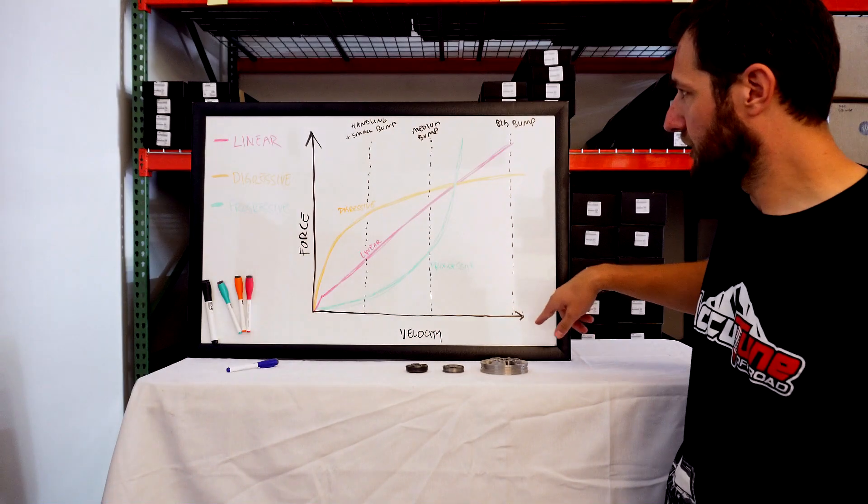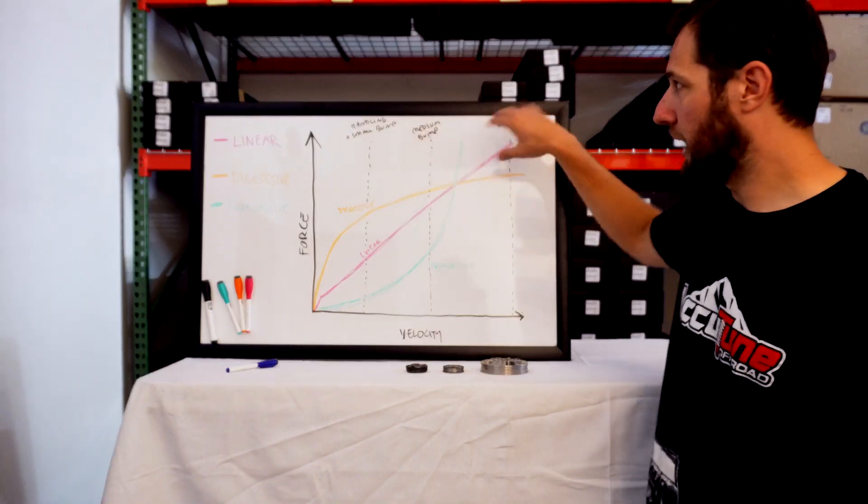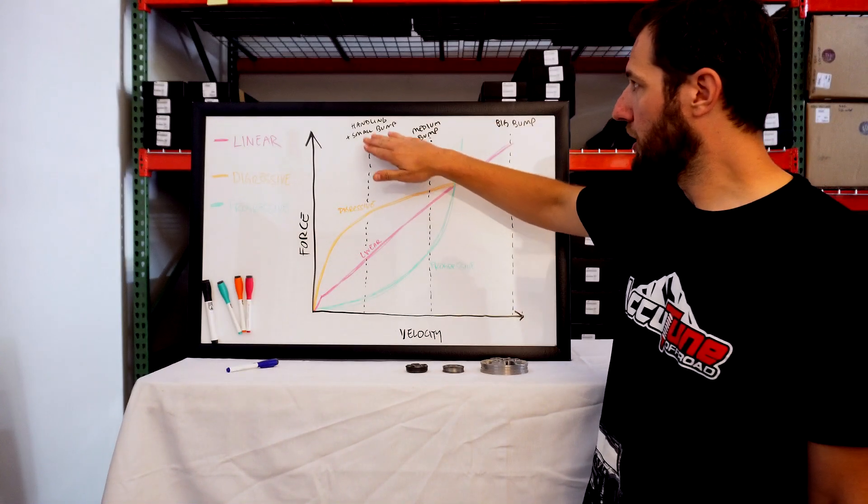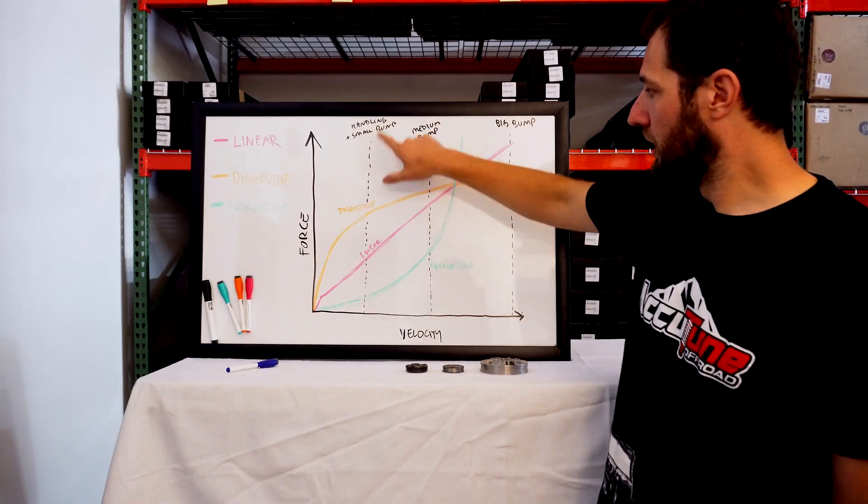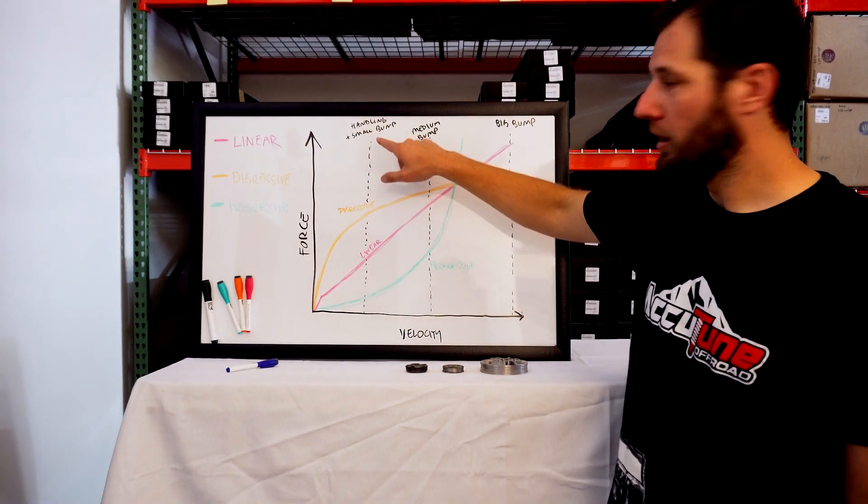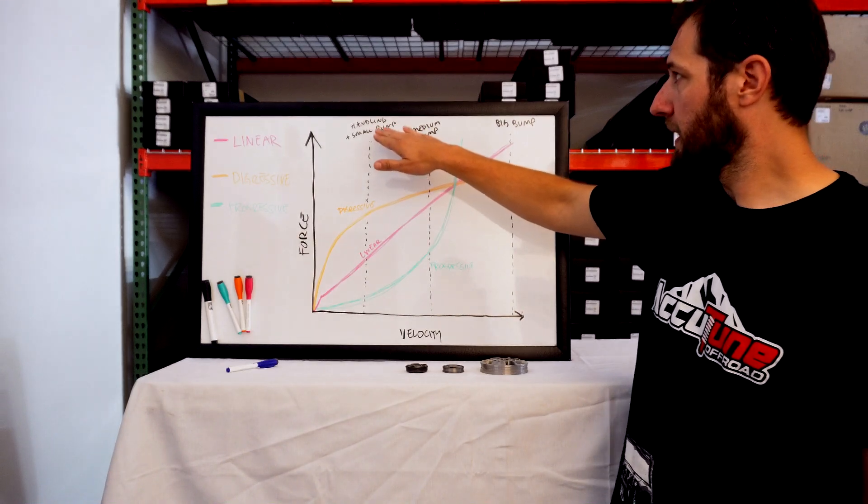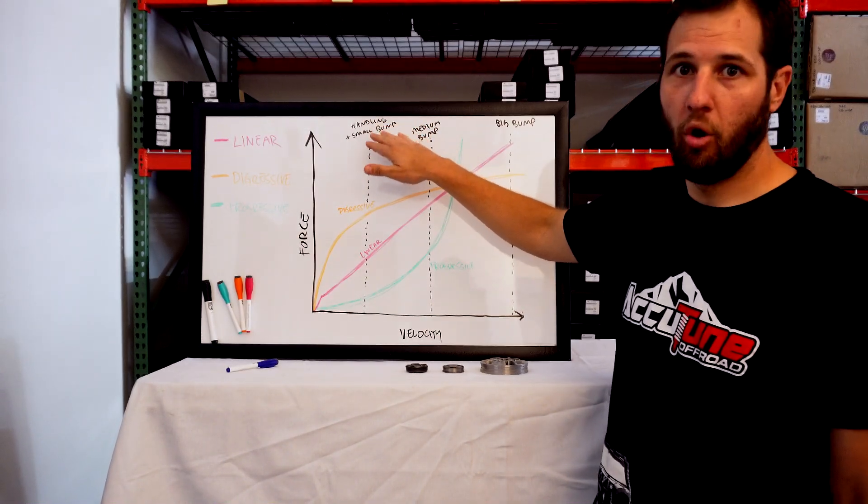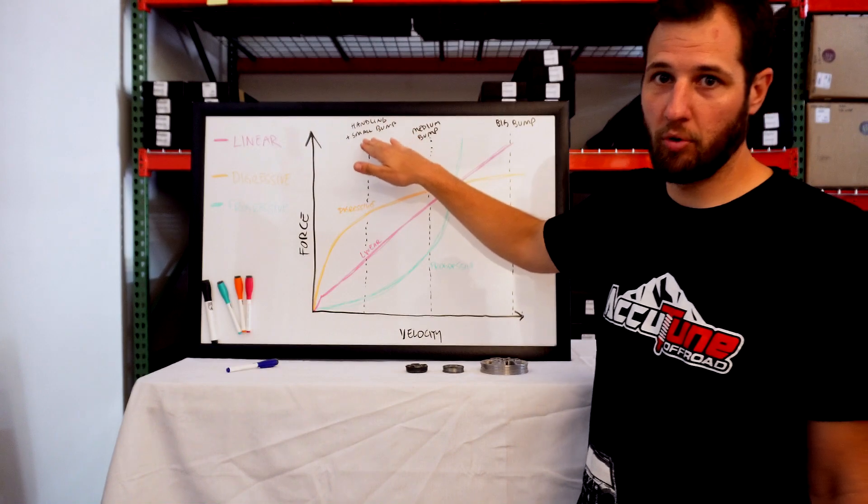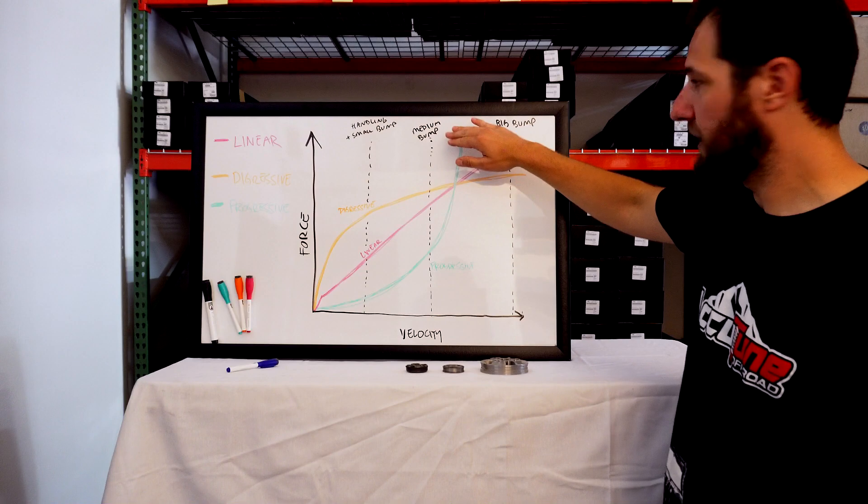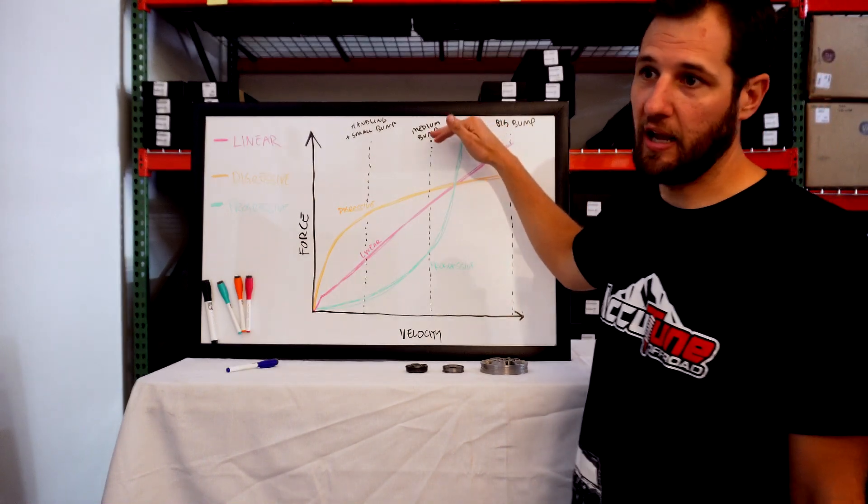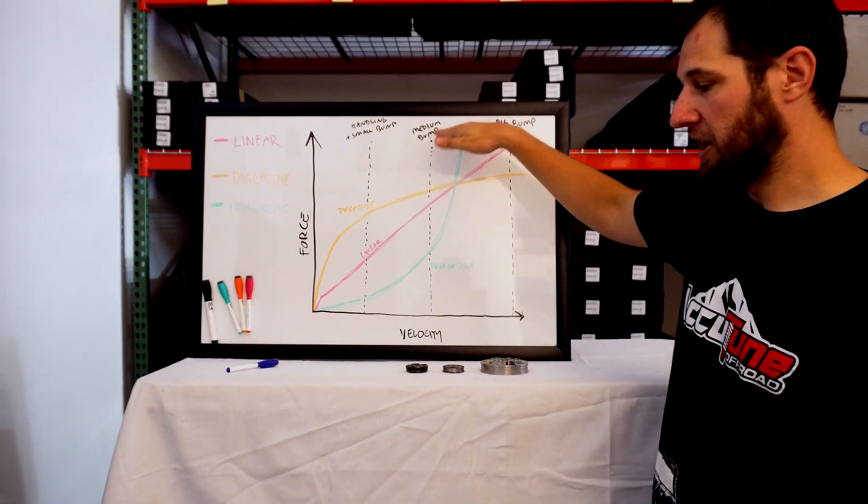I've laid out some general guidelines here of where you might expect a small bump or handling. This velocity here represents going around a corner or maybe hitting some washboard road. This line, this velocity, is a medium-sized bump, like hitting a speed bump in a parking lot maybe at 15 to 20 miles an hour.